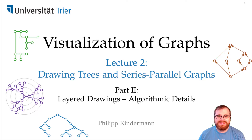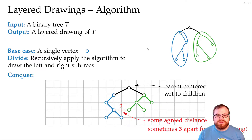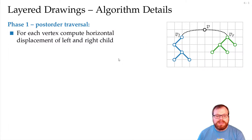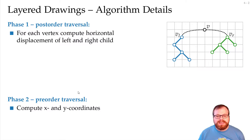Now let's have a look at the details of our algorithm. To do that, we want to do two steps: we want to do two traverses of our whole tree. First, we want to do a post-order traversal, and then we want to do a pre-order traversal to compute the exact x and y coordinates.